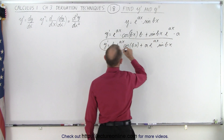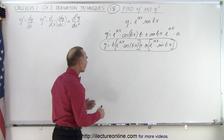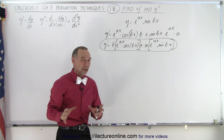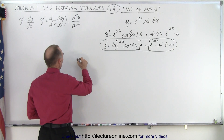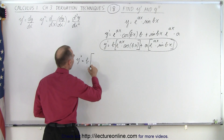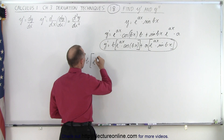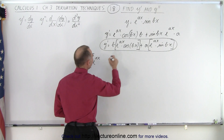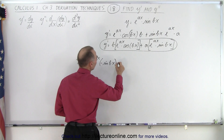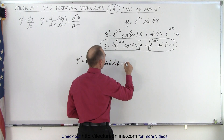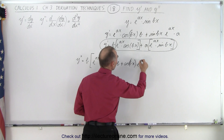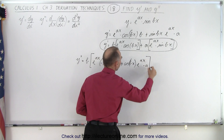So now here we have the first derivative — I'll circle it so we can see it. Now we take the second derivative. Notice again that we have a product here and a product there, so we'll have to apply the product rule twice. We have y double prime equal to — we have b times: we take the first, e to the ax, times the derivative of the second. The derivative of cosine is negative sine, so negative sine of bx times the derivative of bx, which is b, plus the second which is the cosine of bx times the derivative of the first, which is e to the ax times the derivative of the exponent, which is a.